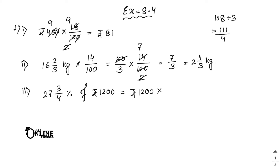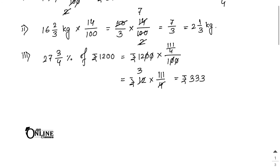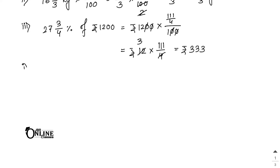111/4 percent means 111/4 divided by 100. The zeros cancel, then ₹1200 × 111/4: 4 cancels with 1200 giving 300, so 300 × 111/100 = 333. Your answer is ₹333.